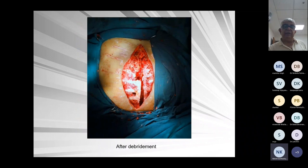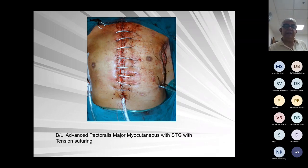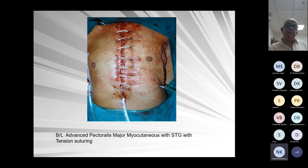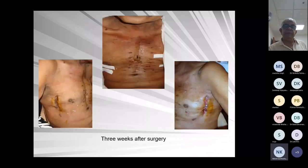Another case after debridement: one of my colleagues advanced the major myocutaneous flap with skin and then covered the secondary defect with a split-thickness skin graft and tension suturing. This is a technique where you do not have to separate skin flaps and muscles — you advance the muscle flap along with the skin, and the secondary defect is closed with a skin graft. This is done where the skin is also lacking. In most cases we do only the muscle flap. This is three weeks after surgery — you can see the results.